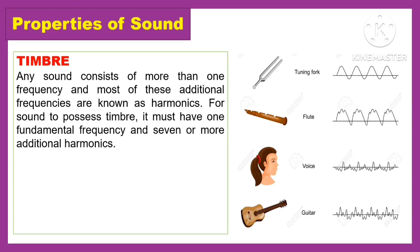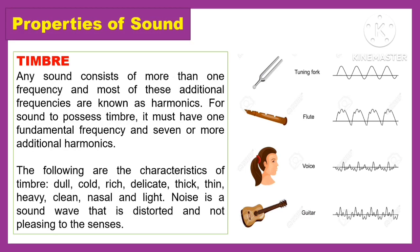Any sound consists of more than one frequency, and most of these additional frequencies are known as harmonics. For sound to possess timbre, it must have one fundamental frequency and seven or more additional harmonics.